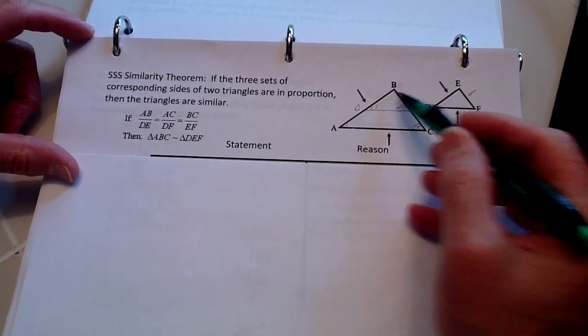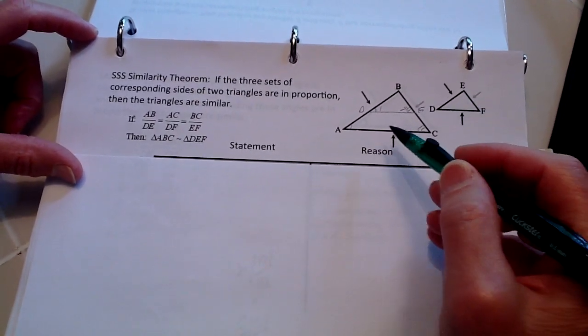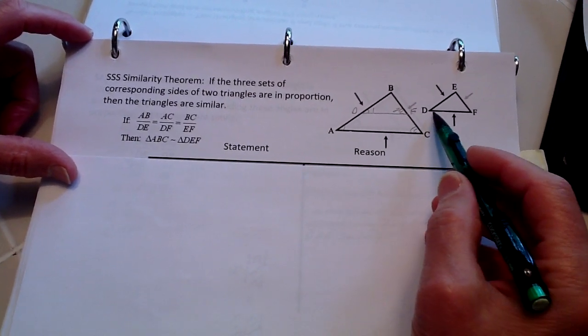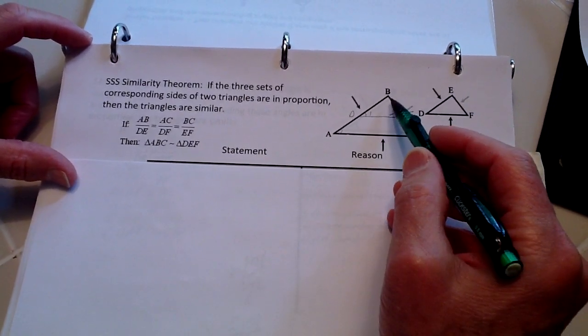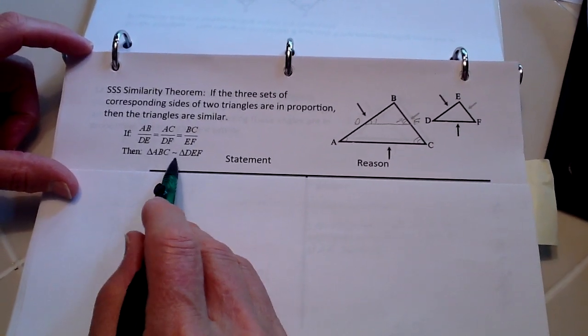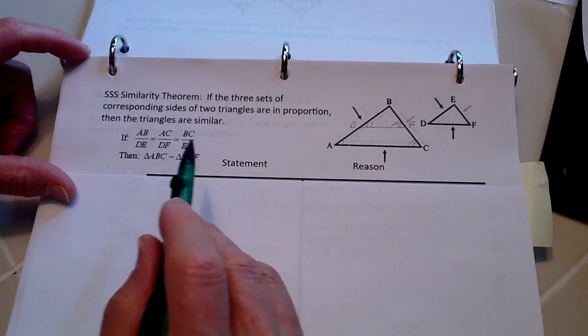In other words, AB to DE is the same ratio as AC to DF and BC to EF. And we want to prove that these triangles are similar.